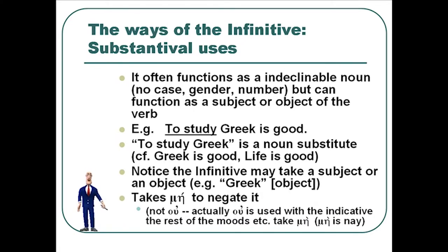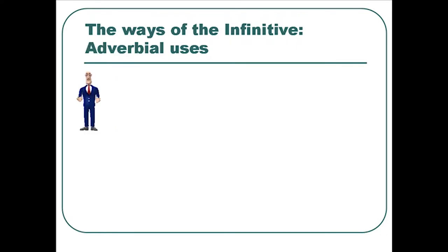The infinitive may take a negative, and when you negate the infinitive, you negate it with mē — you don't use ou, which is only for the indicative. Like the participle, you use the mē form to negate an infinitive. Ou is largely used just for the indicative. So the infinitive may act as a substantive or noun — it may be the subject, it may be the object, it may take an object, it may take a subject possibly in the accusative — and it can also be used adverbially.